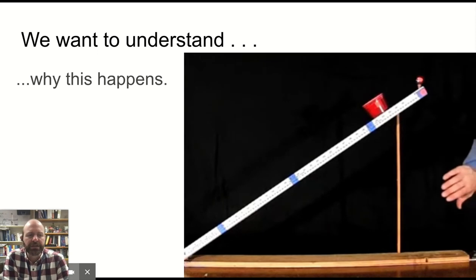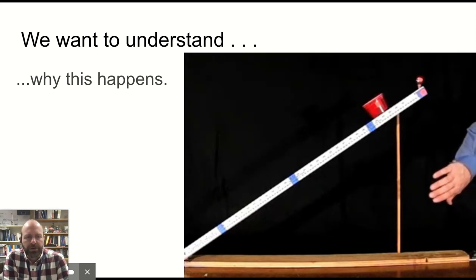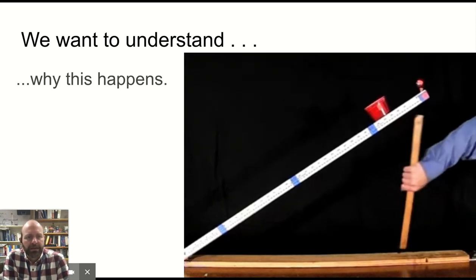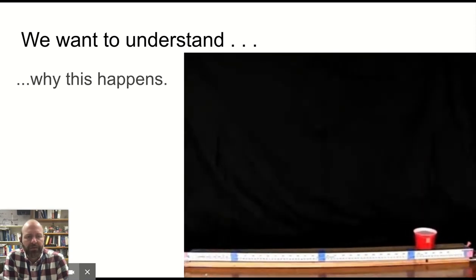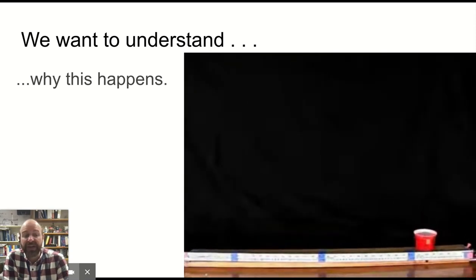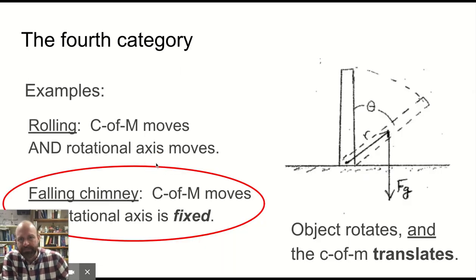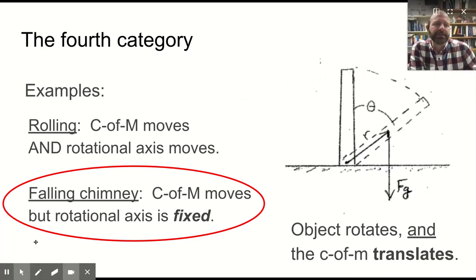But if we watch it in slow motion, you will see that the ball falls straight down, but the meter stick falls faster than the free-falling ball, which should be surprising. And we want to understand why all this happens.